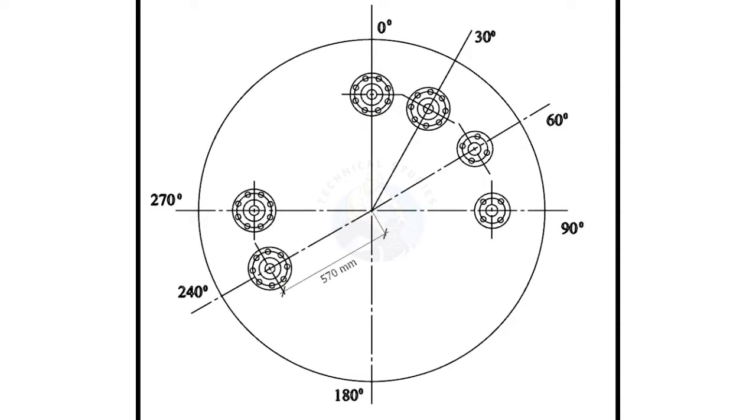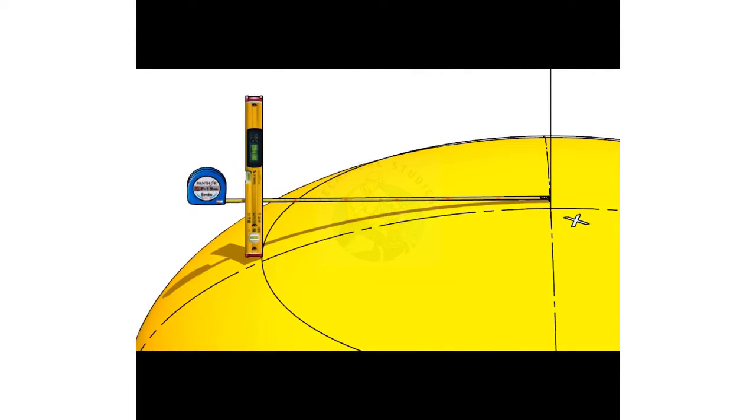Check the radius of the nozzle center. Don't mark the given radius slant on the dish end. Hold a level bottle vertically and then mark the given distance straight, as shown.